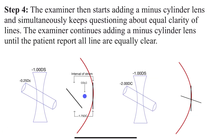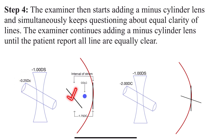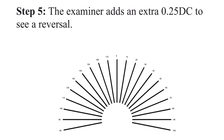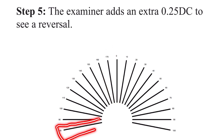Step 4: the examiner starts adding a minus cylindrical lens at the identified axis, simultaneously asking the patient about equal clarity of all the lines, continuing in -0.25 diopter cylinder steps until the patient reports all lines are equally clear. This minus cylinder moves the focal point that was in front of the retina toward the retina. Step 5: the examiner adds an extra -0.25 diopter cylinder to verify reversal — if the patient was seeing the 170-degree line clearly, they should now see lines 90 degrees apart from 170 as clearer. If reversal occurs, you have correctly arrived at your final subjective refraction.